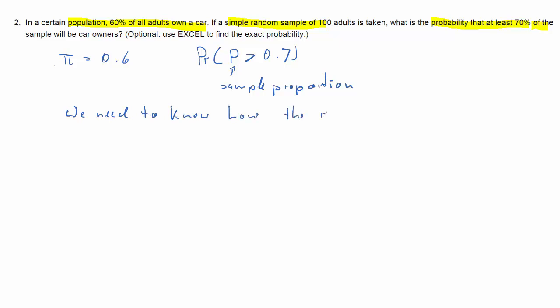All we need to know is how the random variable P̂, because that's based on the random sample, how that is distributed. Only once we know that, do we have any chance of actually calculating that probability.